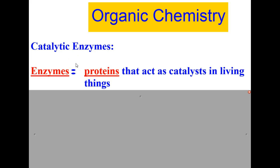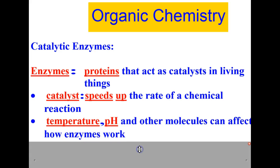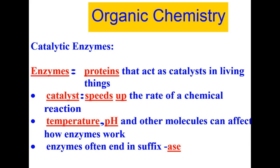Lastly, we want to talk about catalytic enzymes. Enzymes are proteins that act as catalysts in living things. What is a catalyst? A catalyst is a protein that speeds up the rate of chemical reactions. Factors that can contribute to this are temperature, pH, and other molecules can affect how enzymes work. You will recognize enzymes because they often end in the suffix A-S-E.